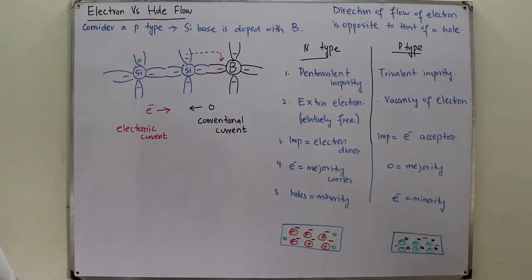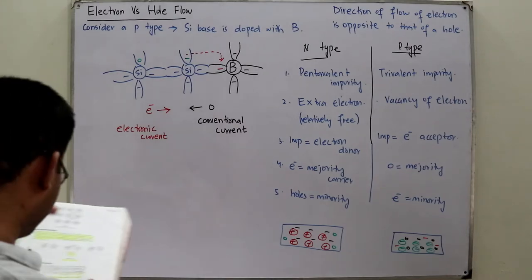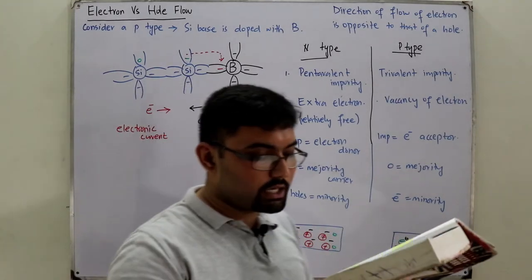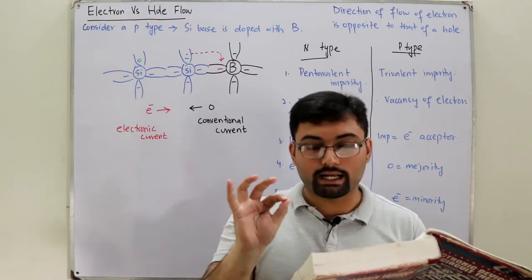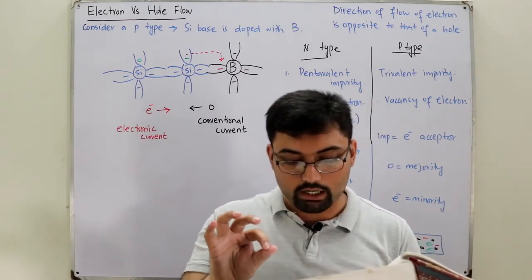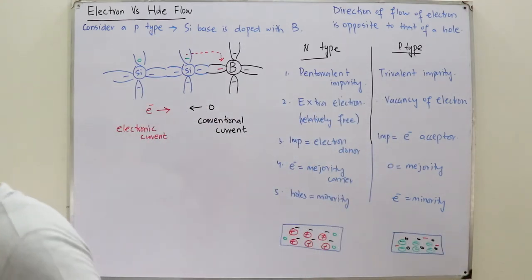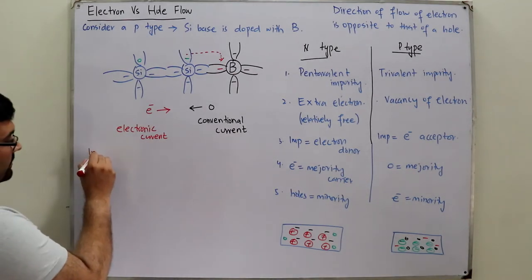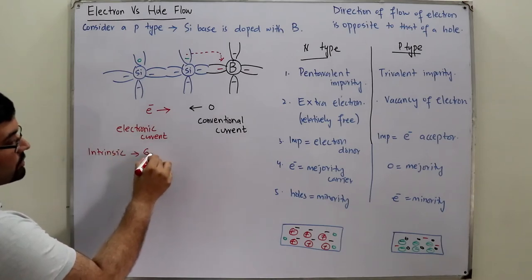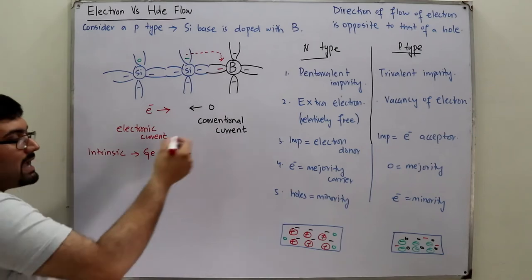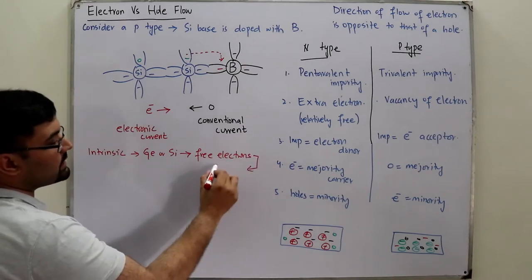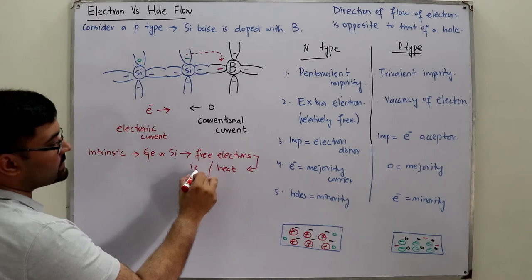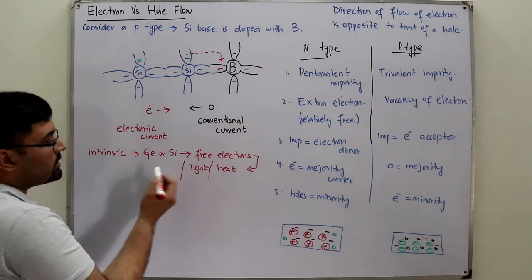In the intrinsic state, the number of free electrons in germanium or silicon is due to the few electrons in the valence band that have acquired sufficient kinetic or thermal energy to break the covalent bond, or due to free impurities that cannot be removed. In the intrinsic — meaning pure — state, without any added impurity, in germanium or silicon, we may have some free electrons due to heat, light energy, or non-removable impurities.